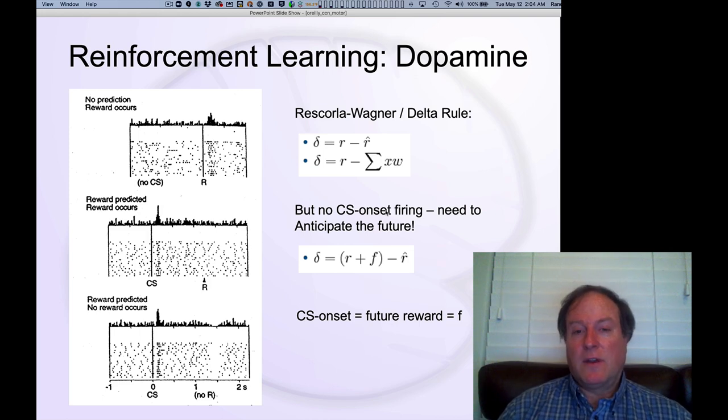So now let's go through and understand some of the math that Sutton and Barto developed to understand, to predict really, how this dopamine system works.